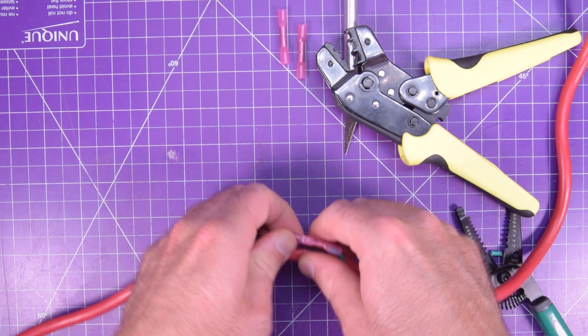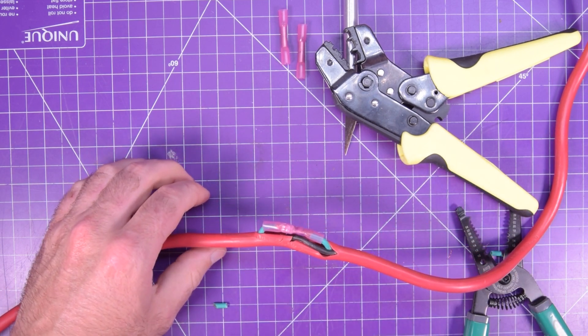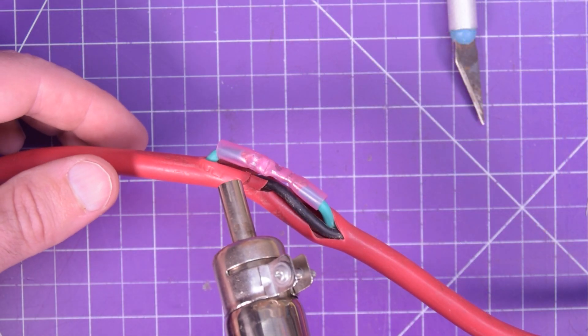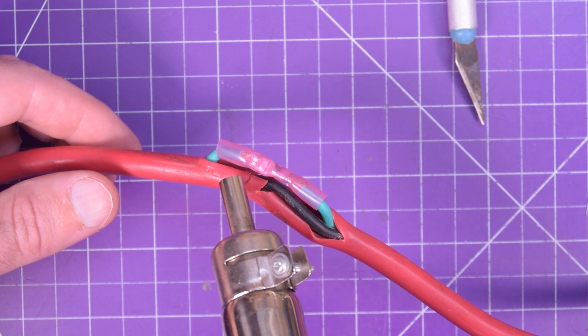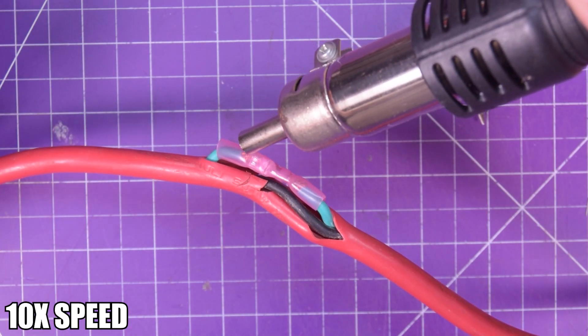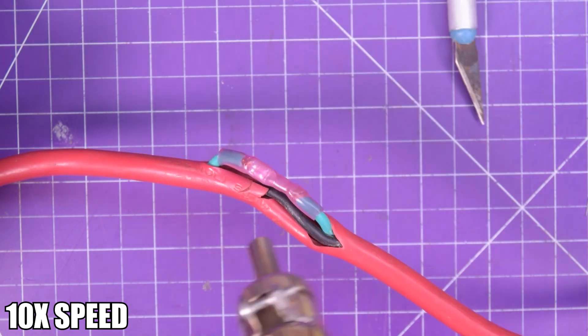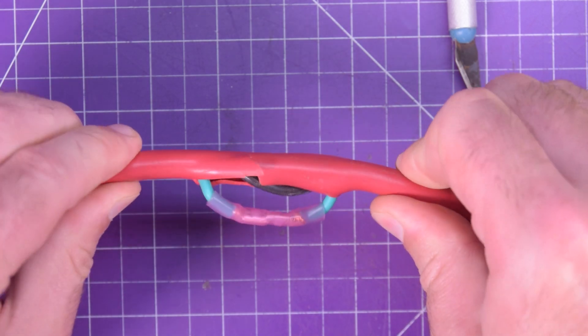There we go, that's crimped really tight. Next, all you do is use a lighter or a hot air gun to heat this up. I'm going to use a hot air gun simply because I've got it, but a lighter works just as well. Just be careful not to overheat it and scorch it. These crimps have an adhesive inside.